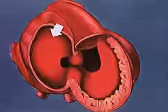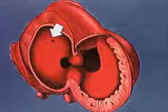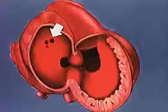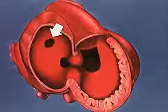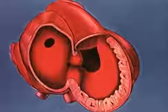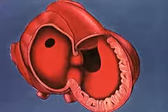Before the foramen primum becomes obliterated, a new opening appears high on the interatrial septum. The timely development of this orifice, the foramen secundum, provides uninterrupted shunting of blood from the right atrium directly into the left.